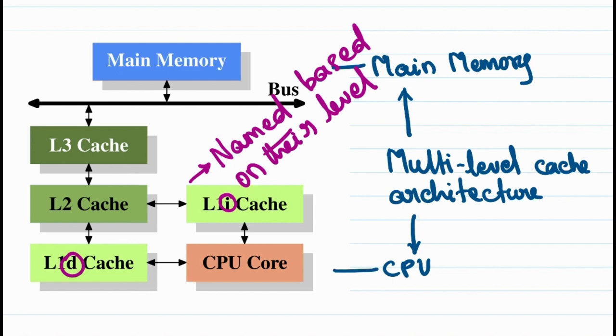Whenever the CPU wants to work on any data which is residing in the main memory, it will be first transferred from the main memory to the L3 cache. From there, it will be transferred to the L2 cache. From there, it will go to the L1 cache. And then the actual operation will be performed on the data.